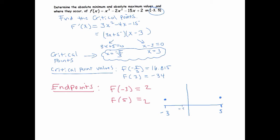So that's negative 5/3. I know that I've got a y value of 16.815. And I know that at 3, I've got a y value of negative 34.